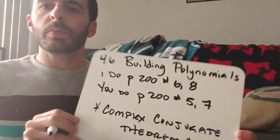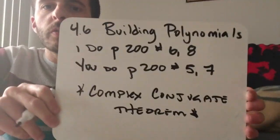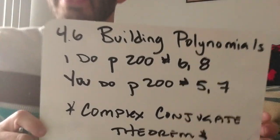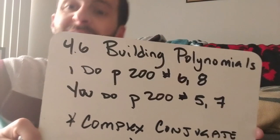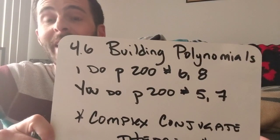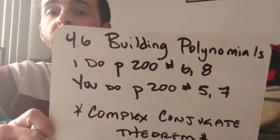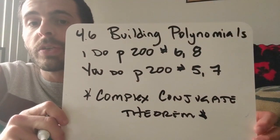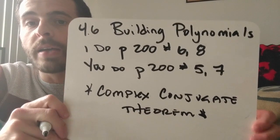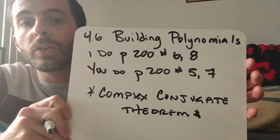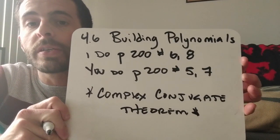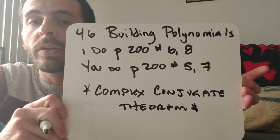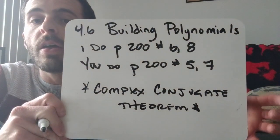Alright, welcome to 4-6. We're going to build polynomial functions again, and it's actually not going to be that much different from last section, 4-5. We're just adding in i's. I'm going to do page 200, numbers 6 and 8. You're going to do page 200, numbers 5 and 7.